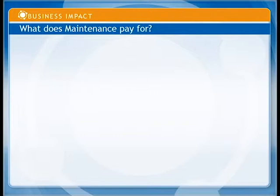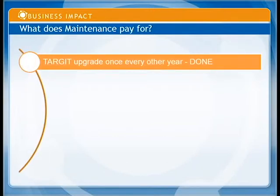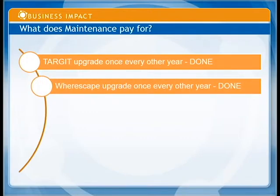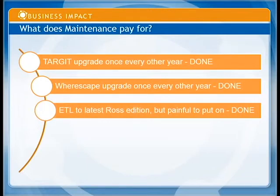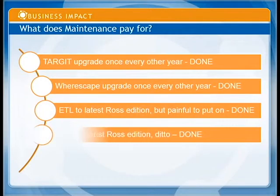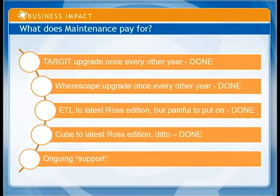What does your maintenance pay for? On the display side, Target releases upgrades every three months — generally one big release and three hotfixes per year. EPM, however, is stuck at version 2.11; you won't even get to 2013 because Ross is essentially saying they have Qlik now. Warescape is also stuck at that license level, so even though Warescape continues to improve, you're not getting the benefit. The staging logic won't be improved either, so paying maintenance on EPM right now is not going to get you the highest value for that dollar.